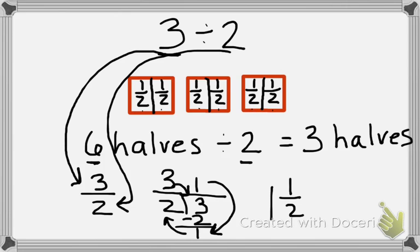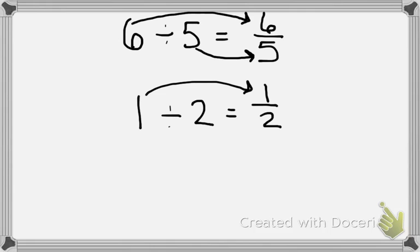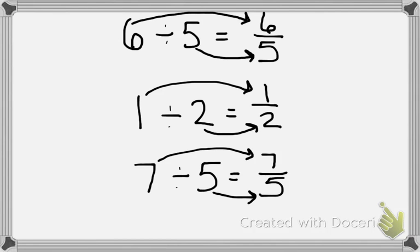Now we're going to try some more problems using my little trick from before. If we had six divided by five, it would be six fifths. The six is the numerator and the five is the denominator. Let's try another one. One divided by two would be one half. The one is the numerator. The two is the denominator. Let's try one last one. Seven divided by five. The answer is seven fifths. The seven is the numerator and the five is the denominator.